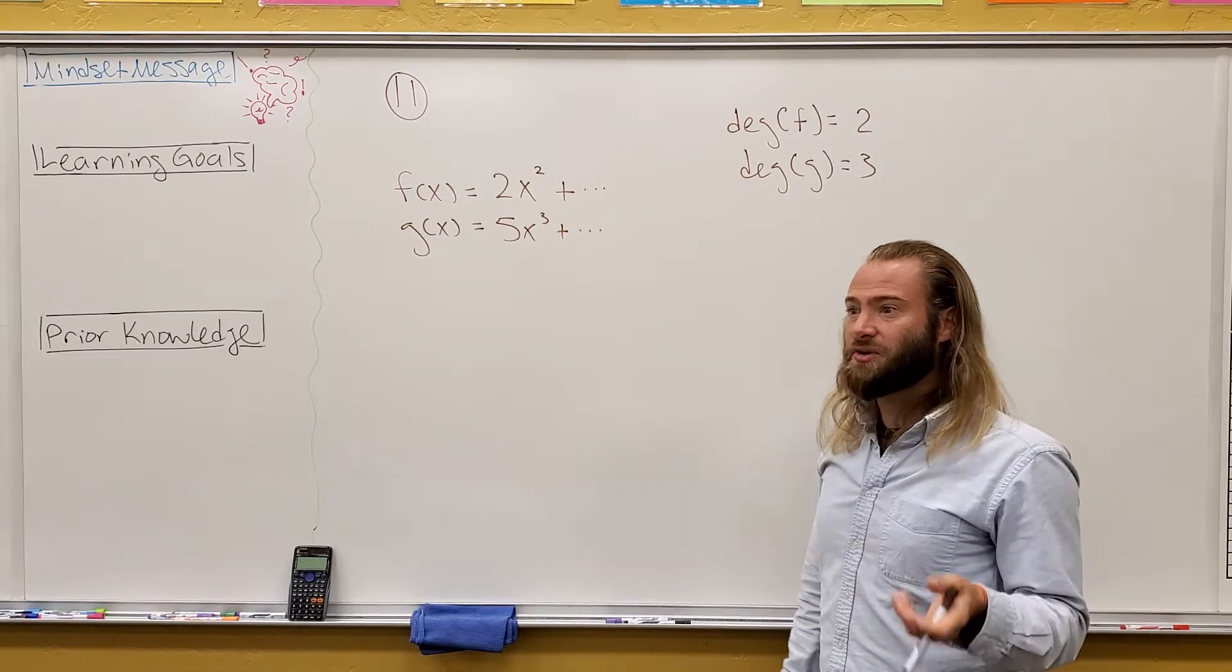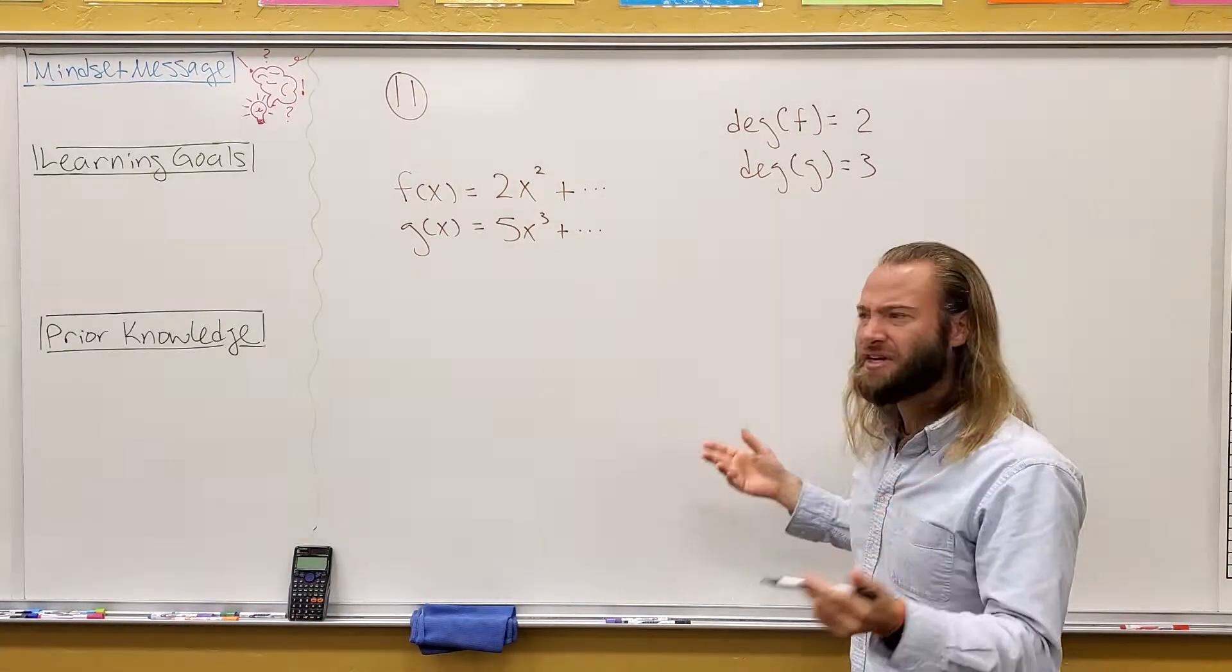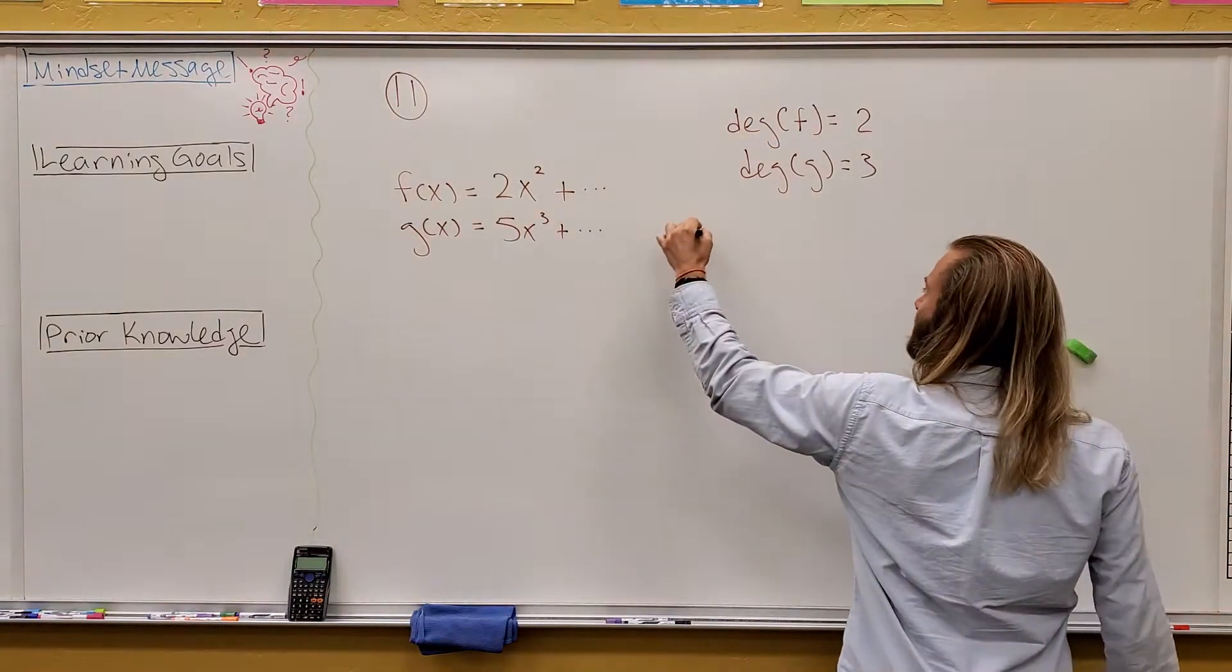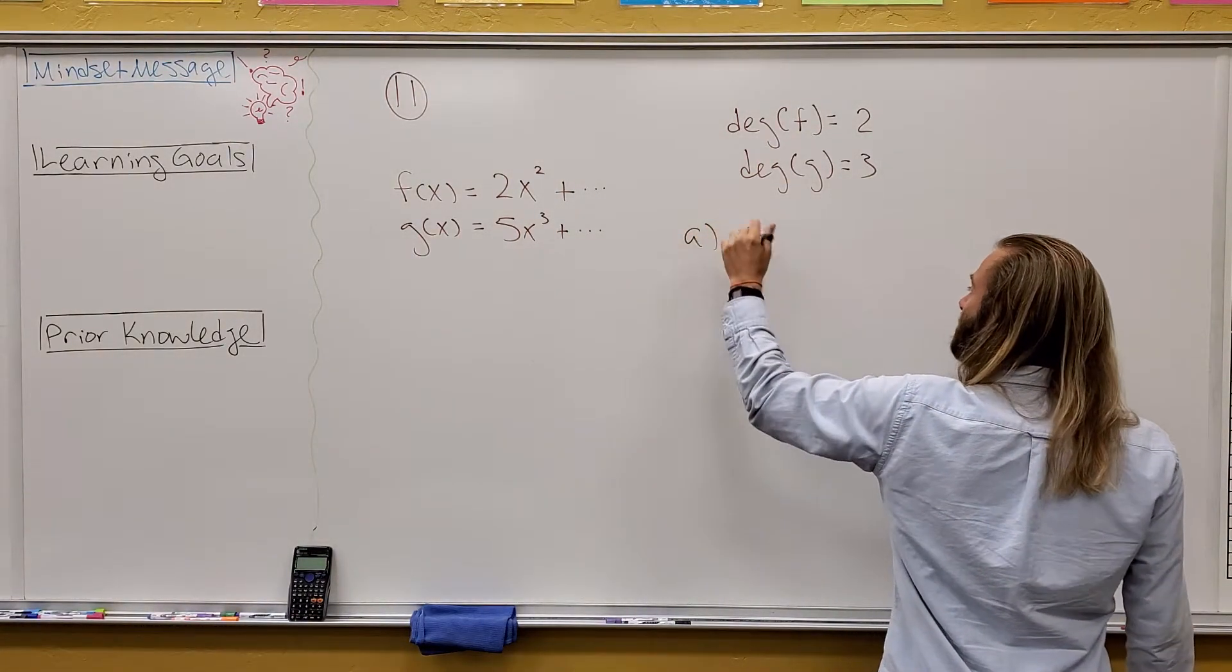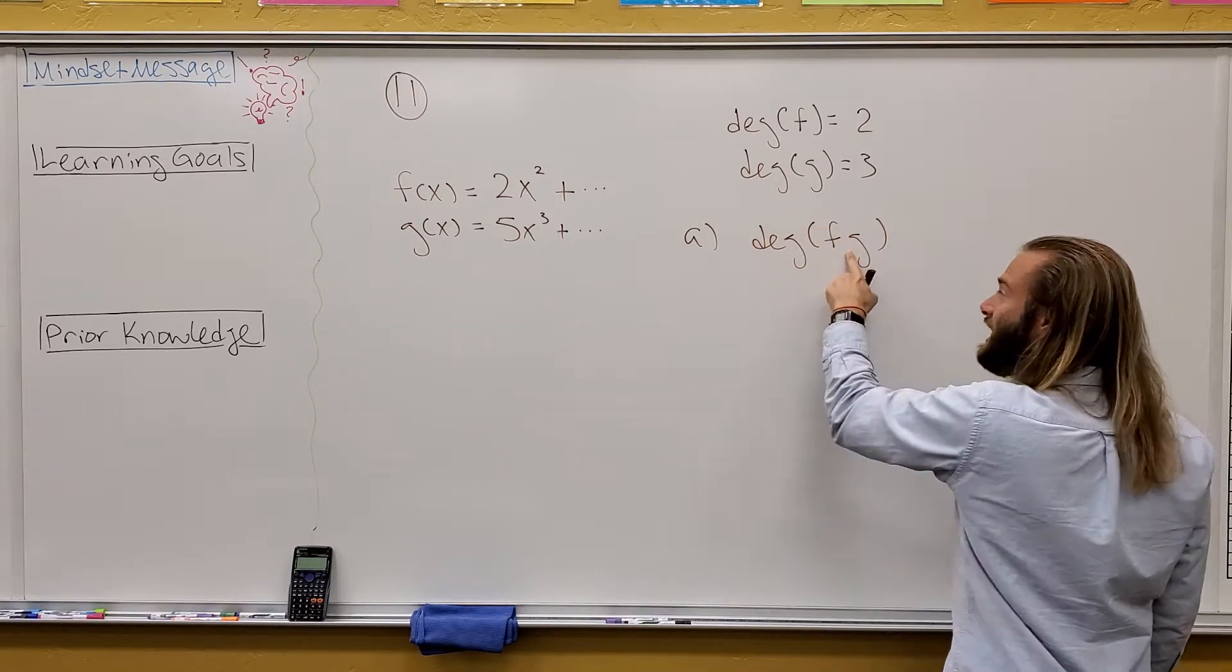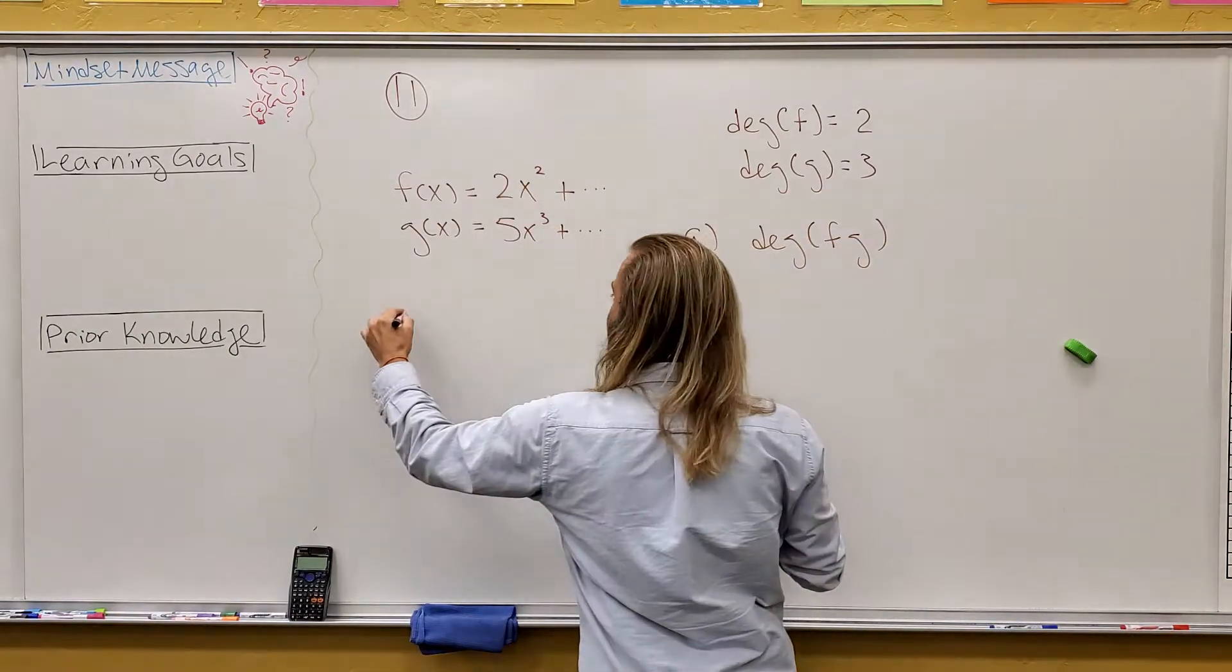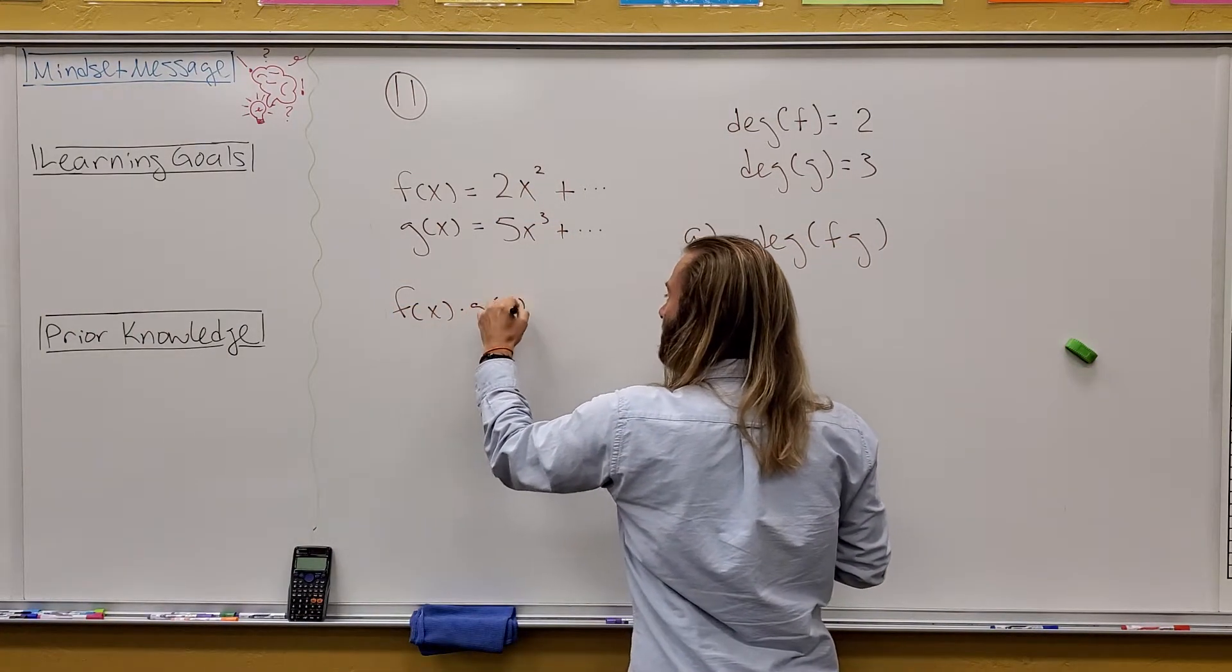So all you're trying to do is find relationships between Deg F, Deg G, and then the various other things. So for example, in Part A, we're trying to figure out how does Deg F G. Remember, Deg F G means F times G. Well, that means you need to think about what F of X times G of X is.